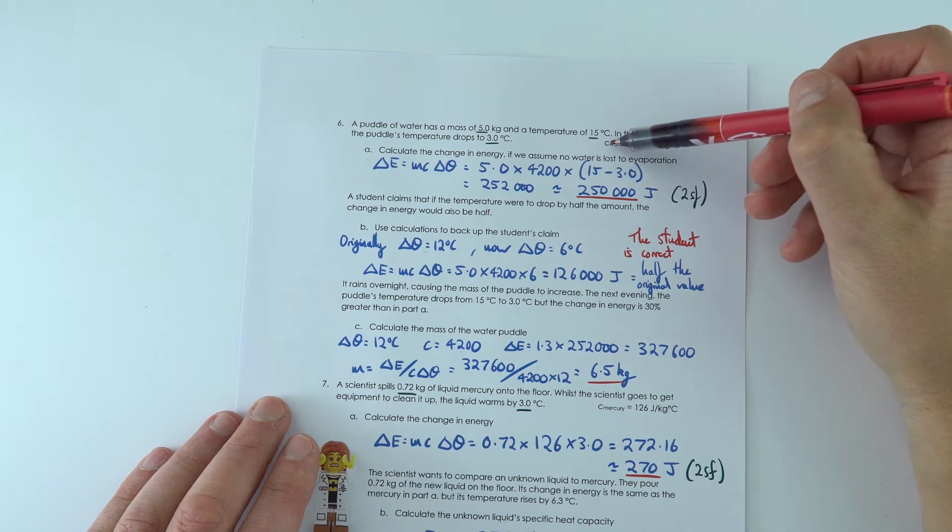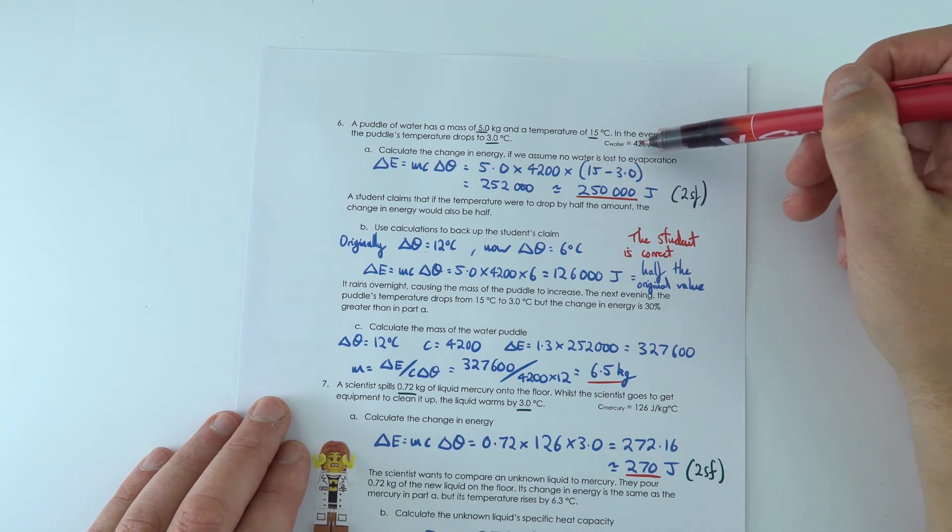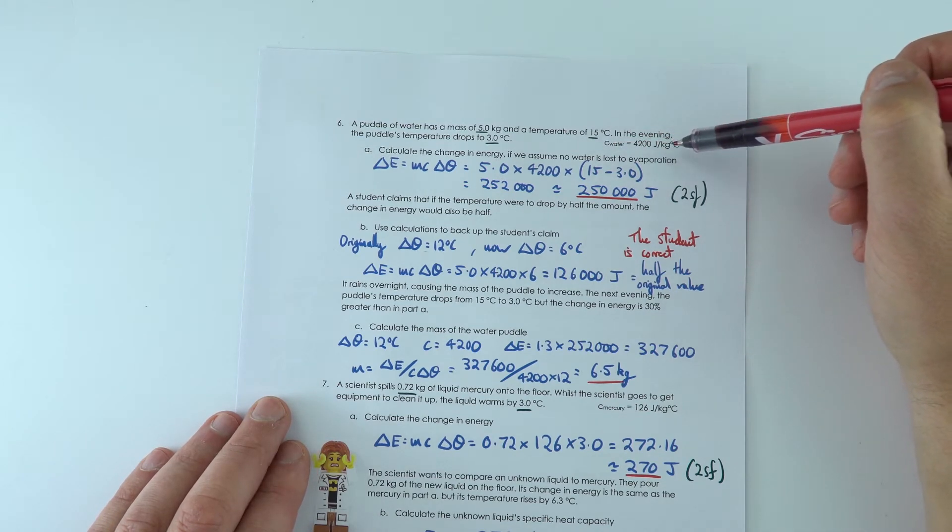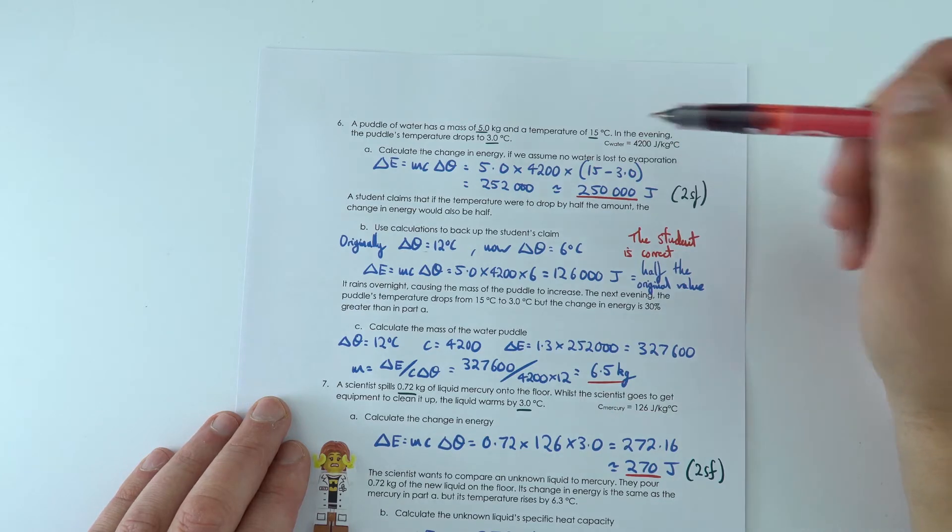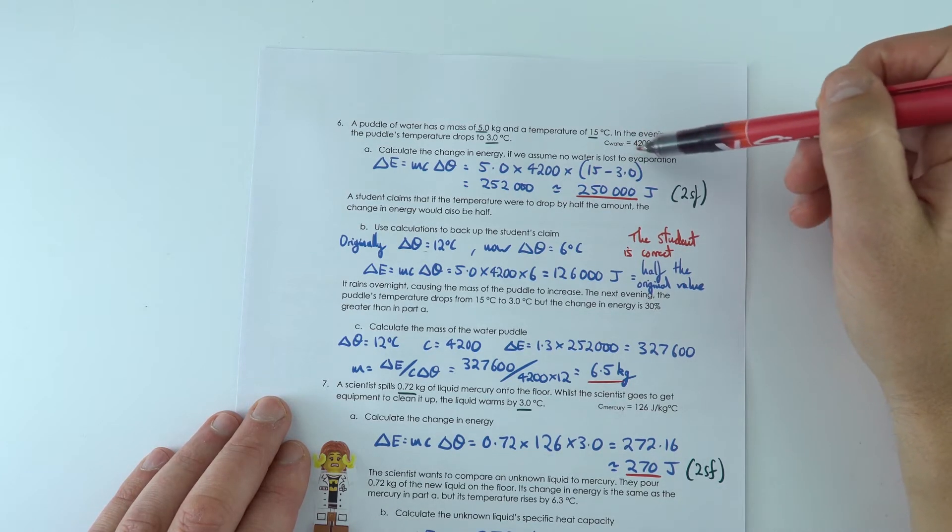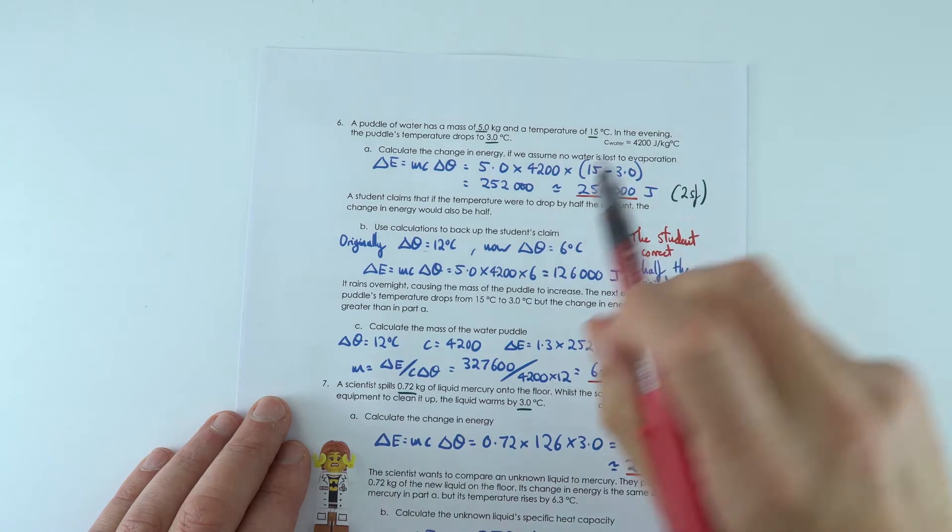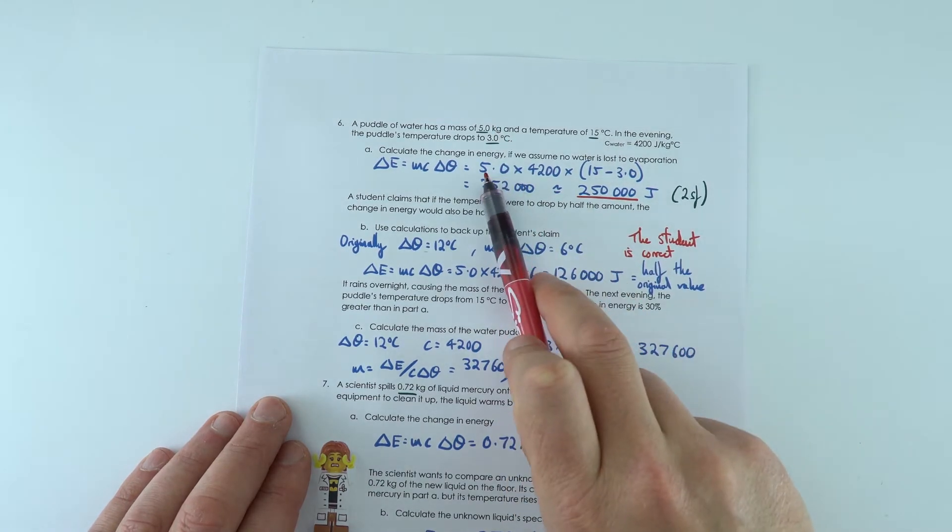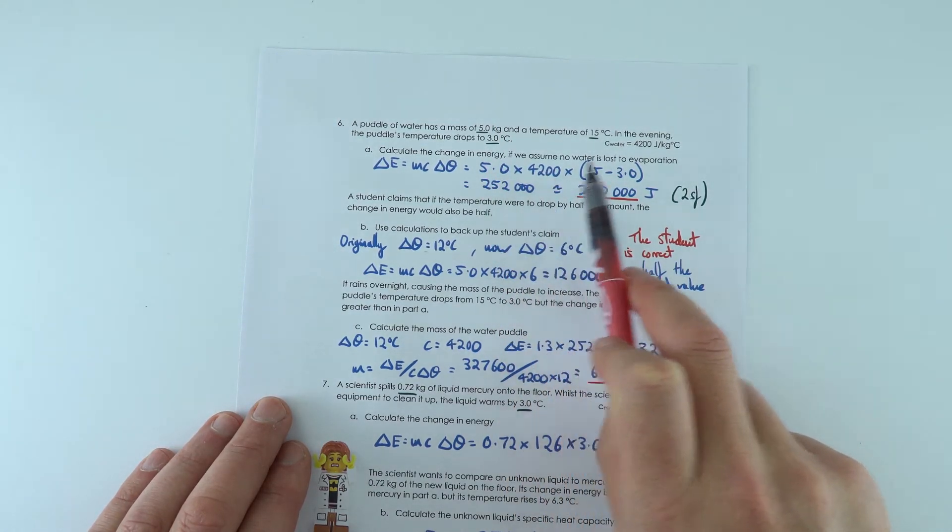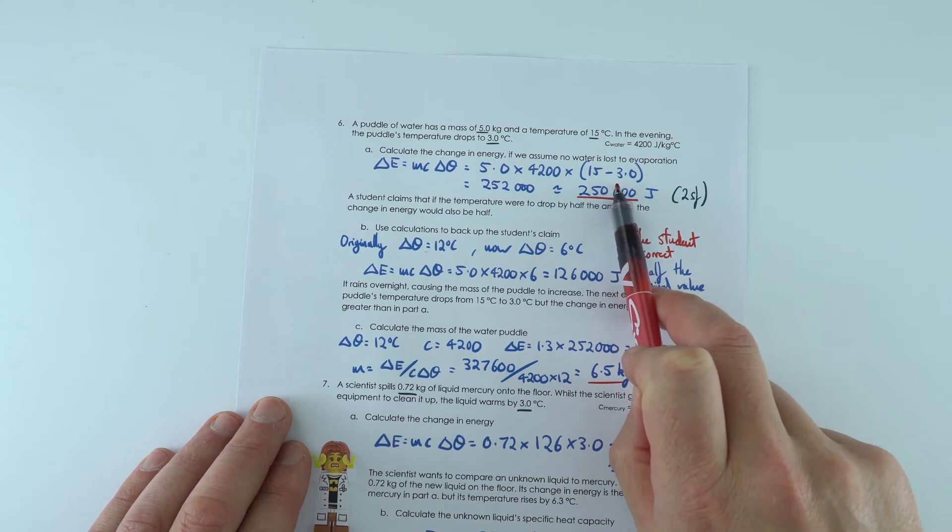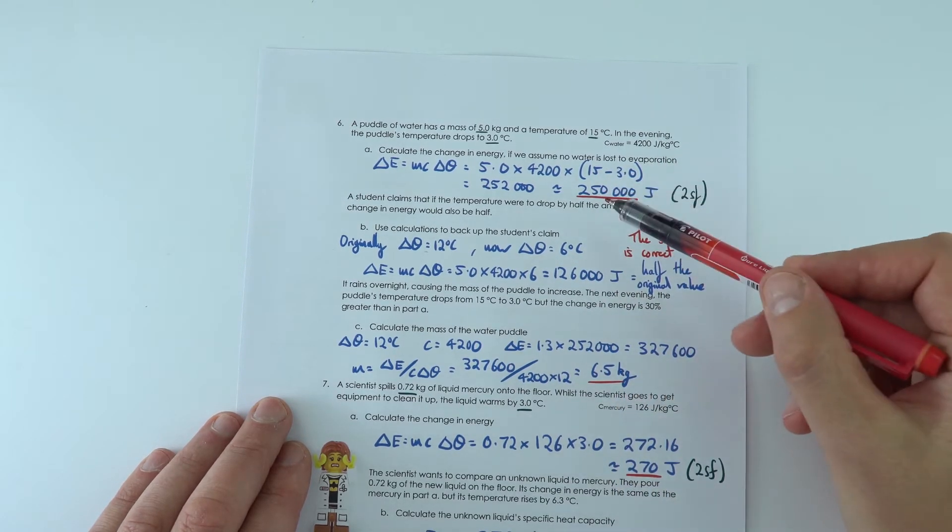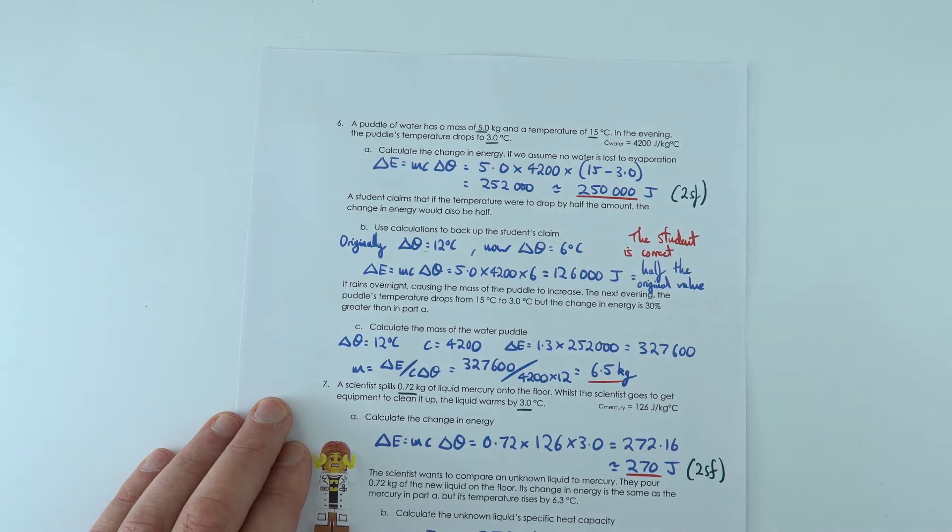The specific heat capacity of water is 4,200 joules per kilogram per degree Celsius. This is going to be used all the time. Often the value for water comes up in questions. So I just multiplied my five kilograms by the specific heat capacity, multiplied by the change in temperature, 15 minus 3, to get 250,000 joules.